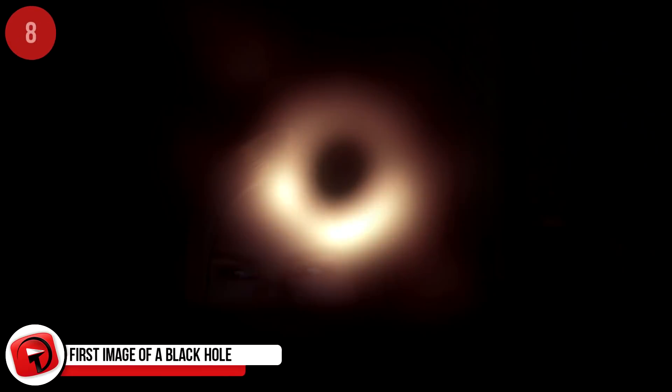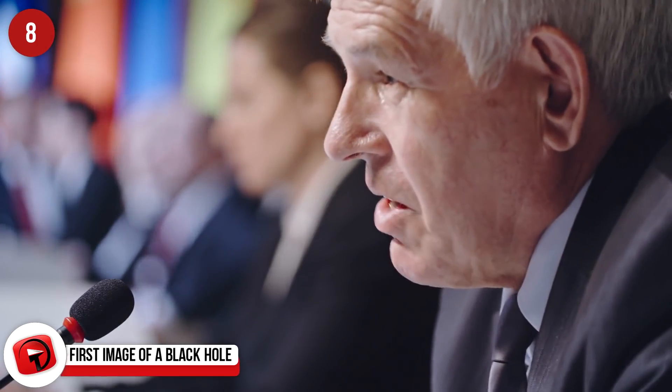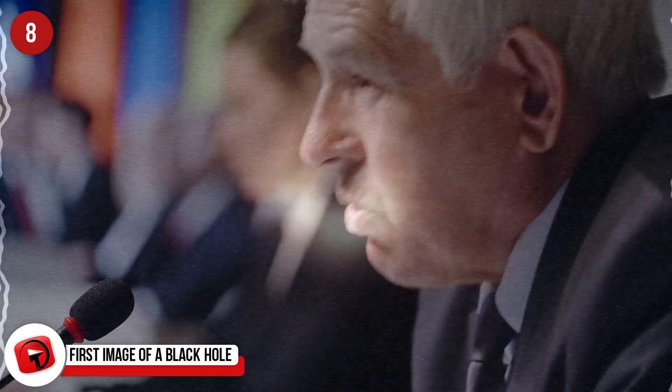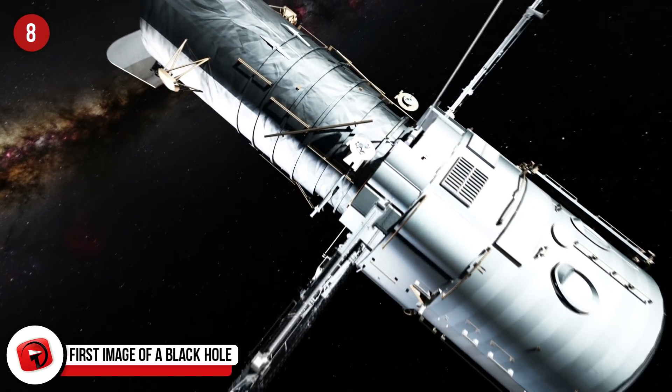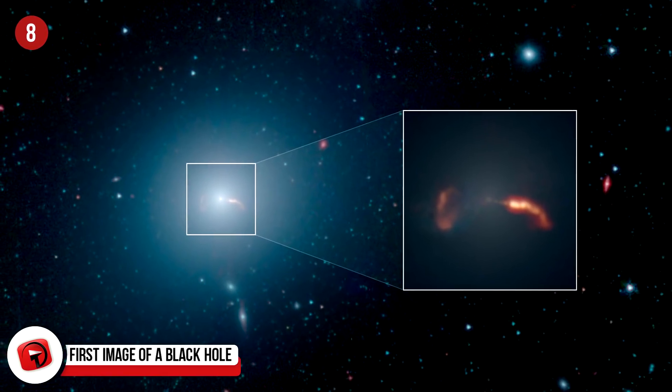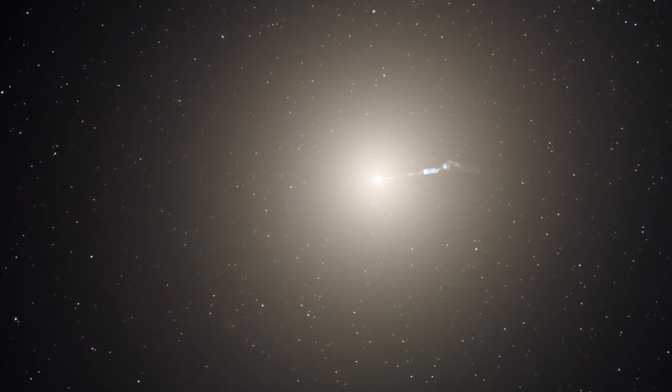First image of a black hole. Perhaps it's old hat by this point, but last year the world was astounded when scientists unveiled the first image of an active black hole. The Event Horizon Telescope had pointed itself at Messier 87's supermassive black hole, 53.5 million light-years away for a week, to capture as much as they could.